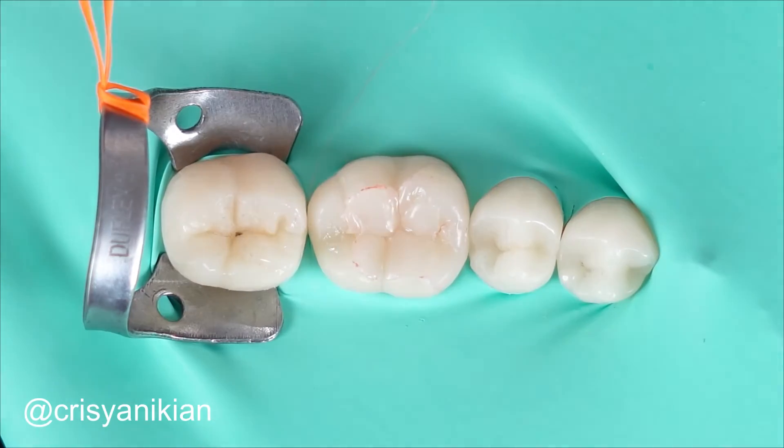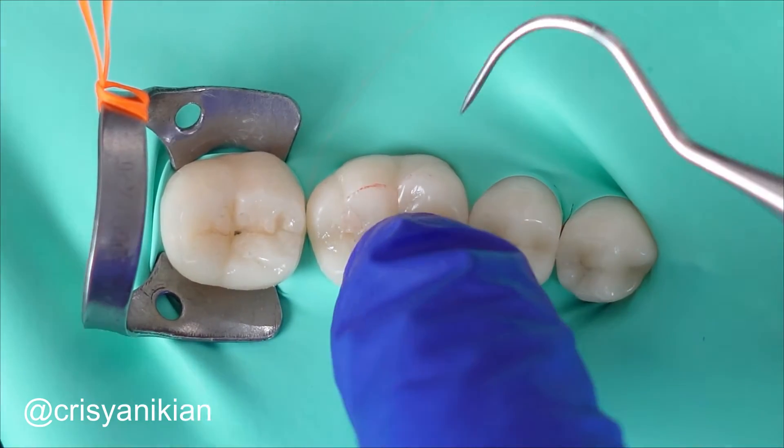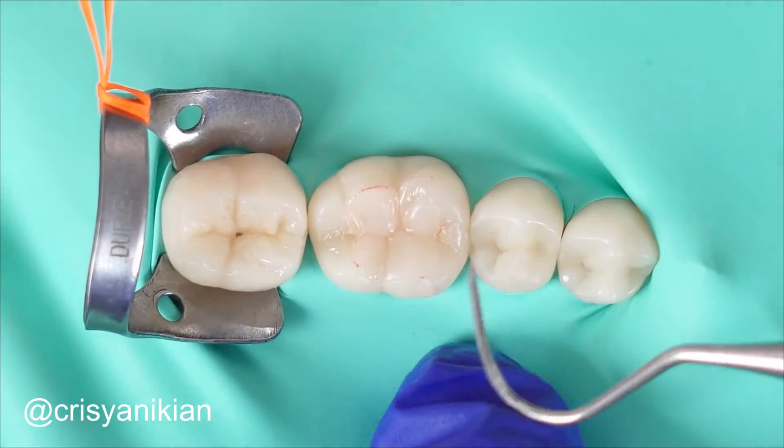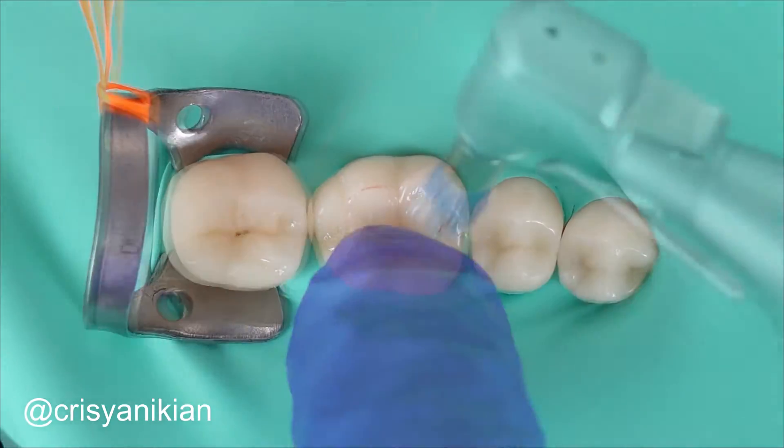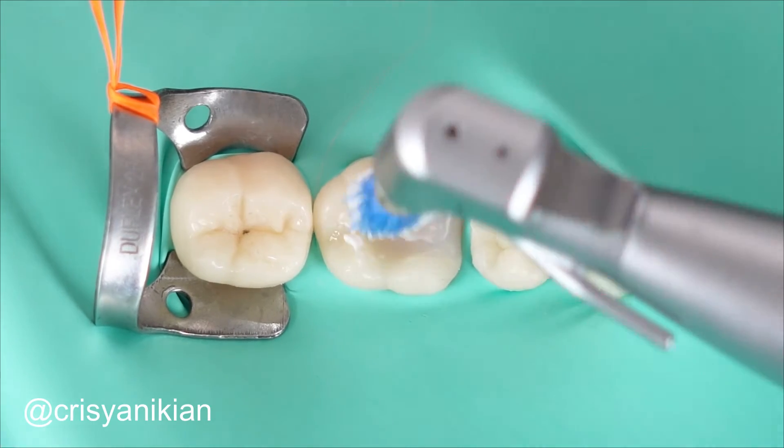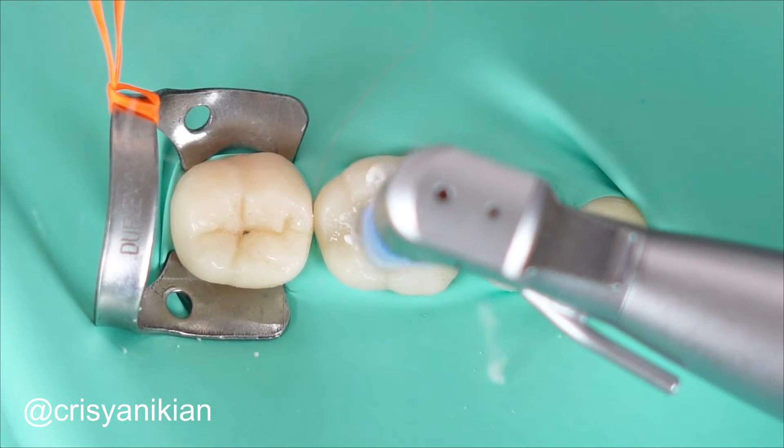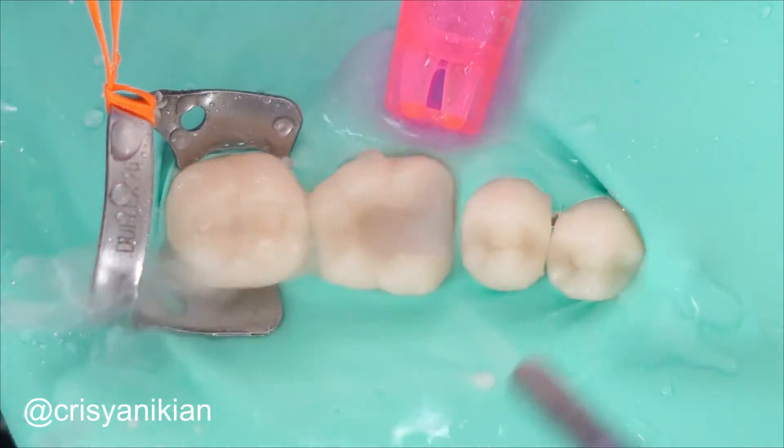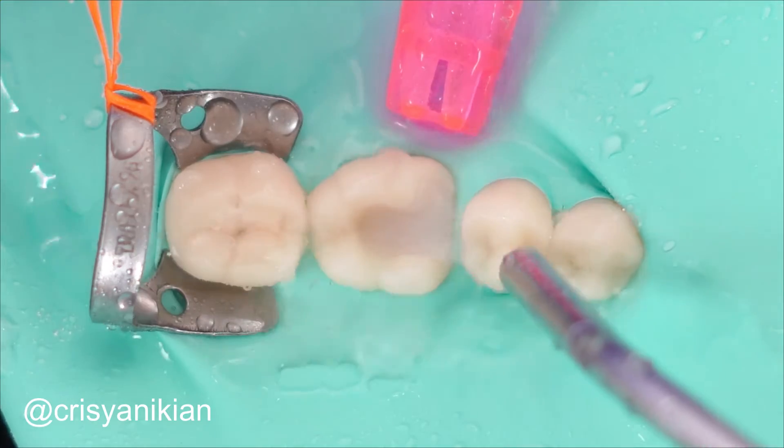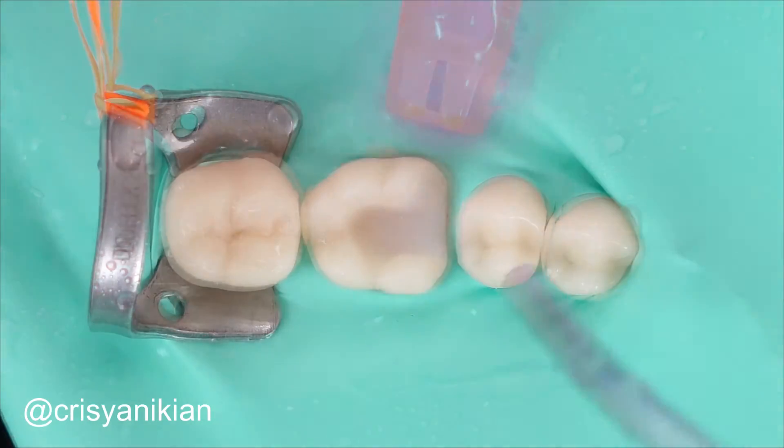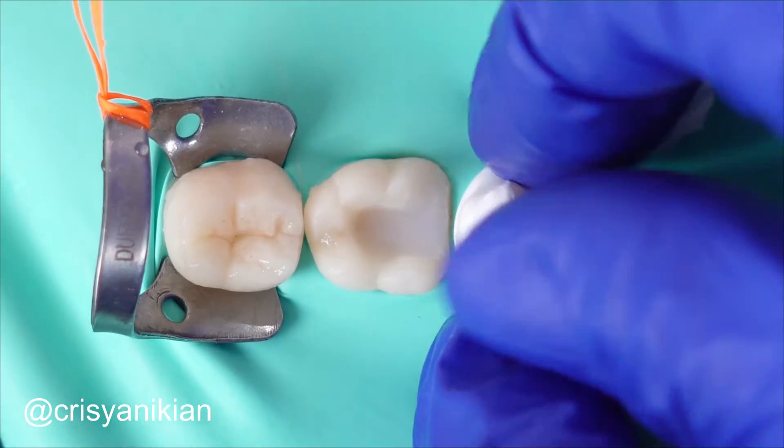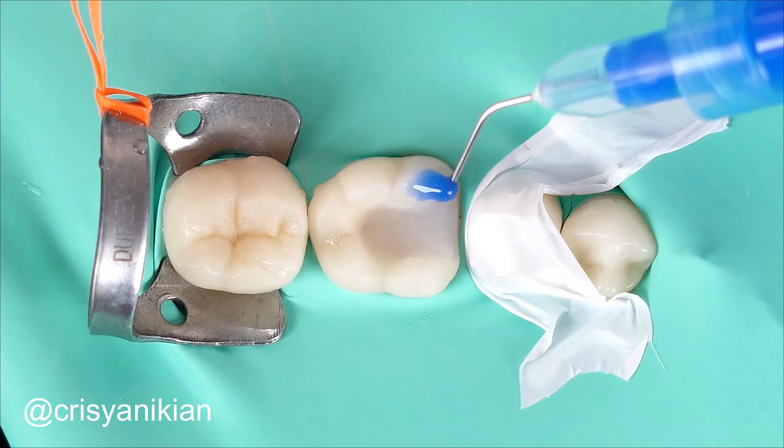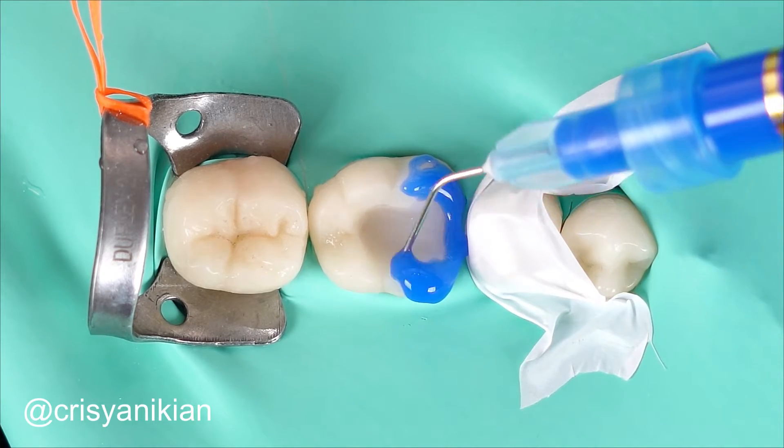Clean the prepared tooth according to your preference, either with a Robinson brush and pumice paste or with aluminum oxide jet. Regardless of the cleaning method, remove the cleaning residues and proceed to acid etching. Use a Teflon strip to protect the adjacent tooth. Apply phosphoric acid to the prepared tooth for 20 seconds, then remove the acid and dry the tooth.